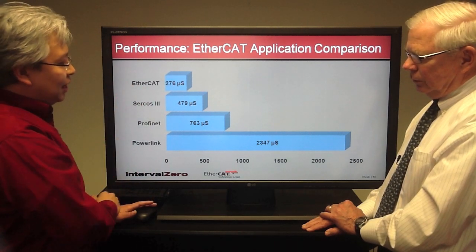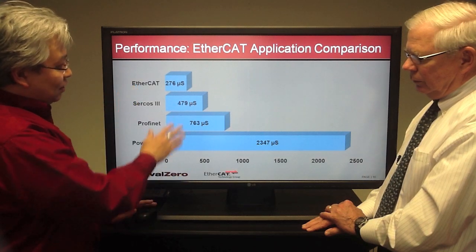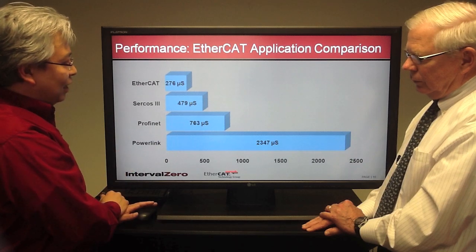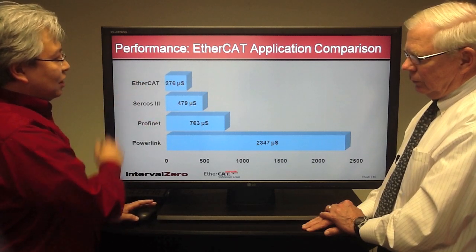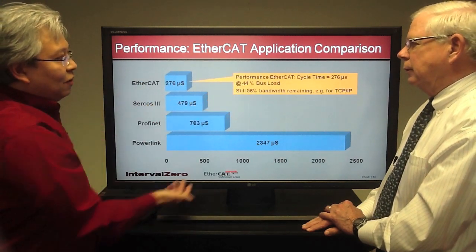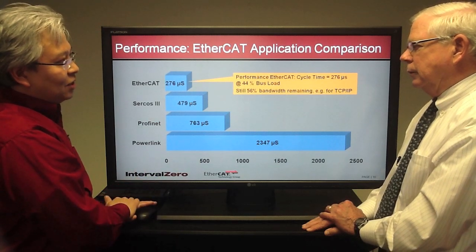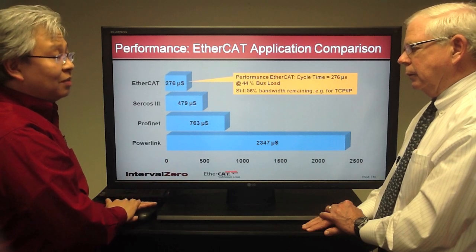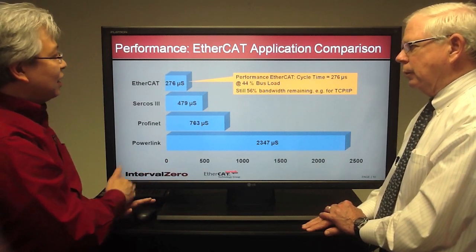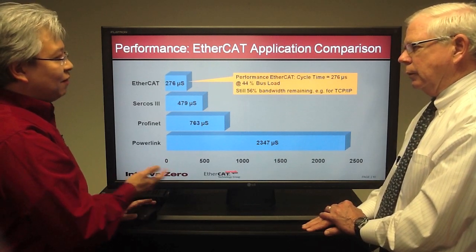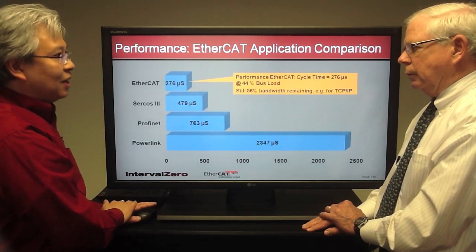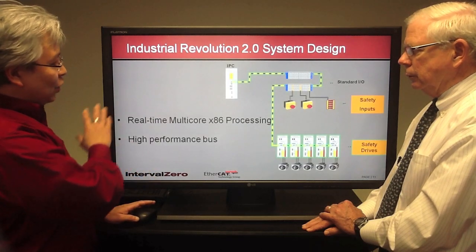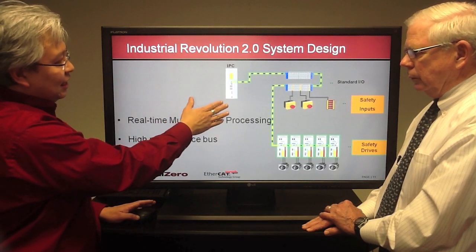That same application was ported to competing bus technologies and EtherCAT was quite a bit faster than Sercos 3 and Profinet, and significantly faster than Powerlink. Notably, it only used 44% of the bus load, leaving 56% remaining — enough to run TCP/IP on top of it simultaneously. So EtherCAT is not only high performance but very flexible, able to run multiple protocols concurrently.